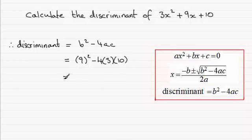And so what we've got here is 9² which is 81, and then we've got 12 here, 4 times 3 is 12, times 10 is 120. And 81 minus 120 is minus 39.